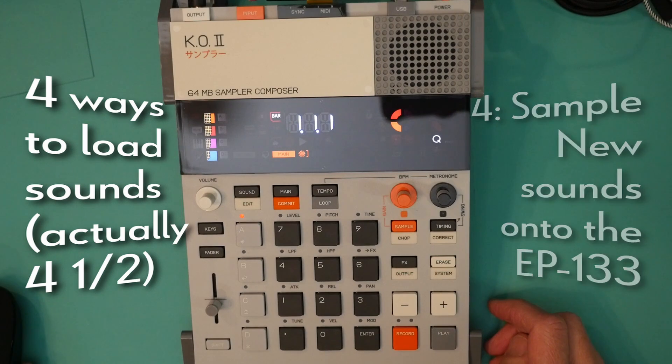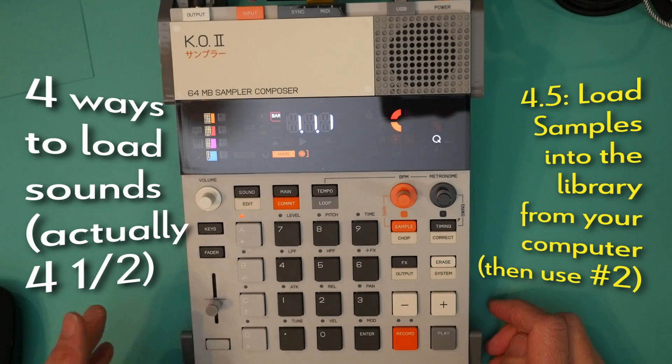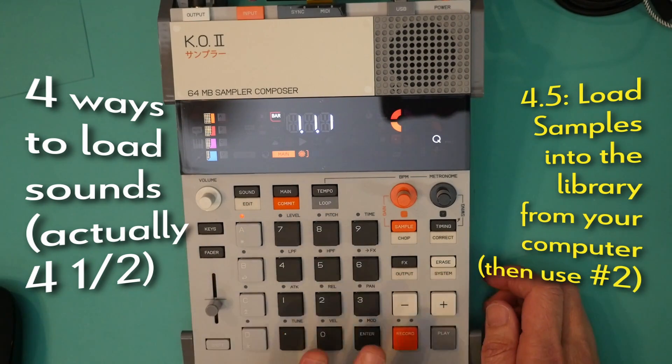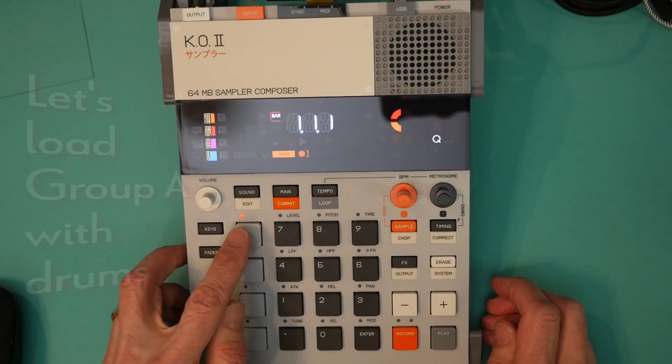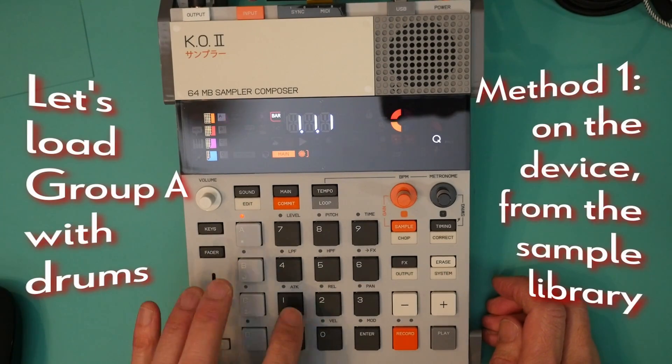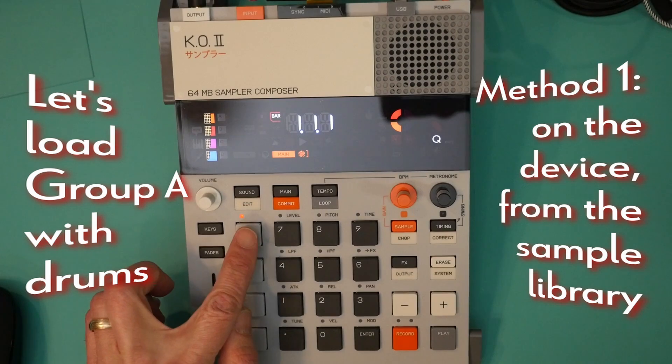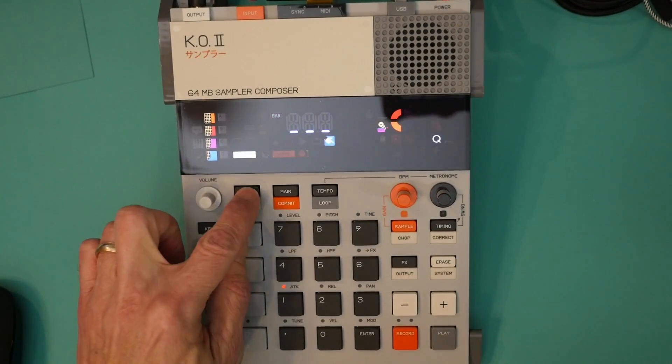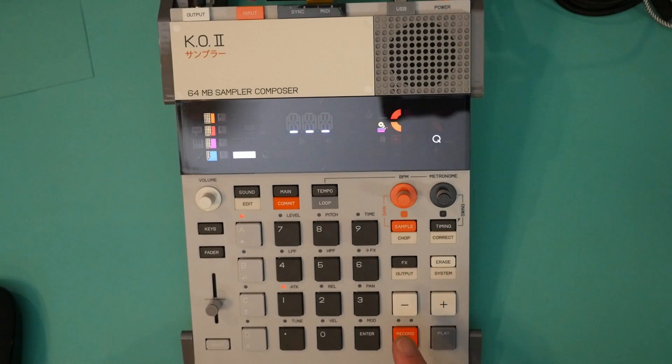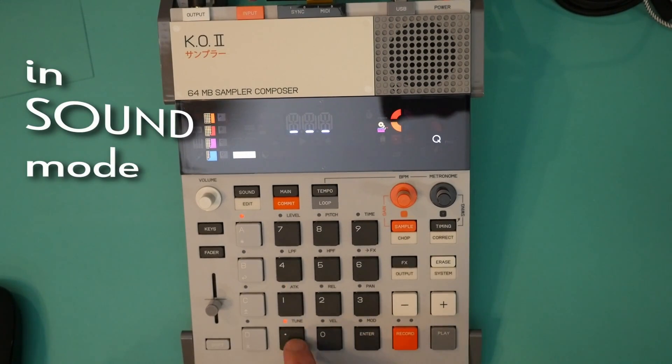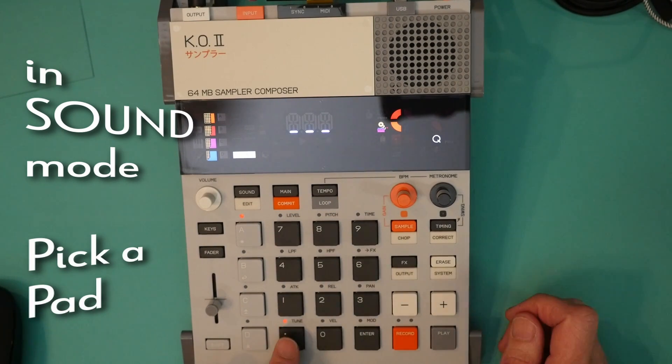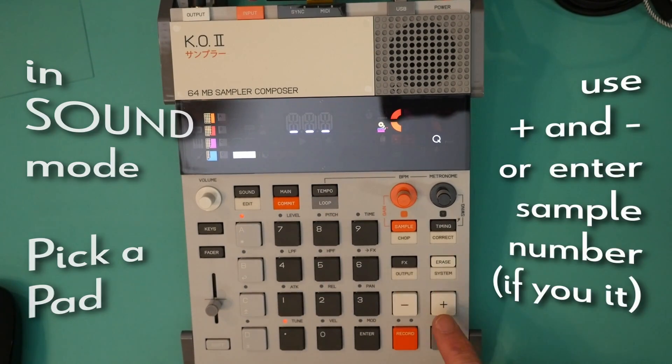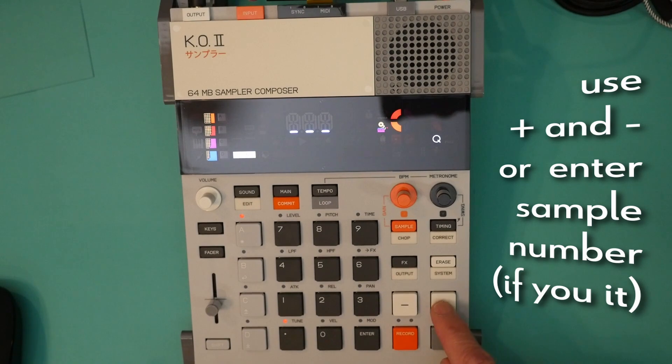Let's start with the first method, adding sounds directly on the device. And we'll do that in group A. First, we tap A to choose it. We go into sound mode by clicking the sound button. We tap any pad to see what's on the pad. And you can see all of these pads are empty by the three dashes.